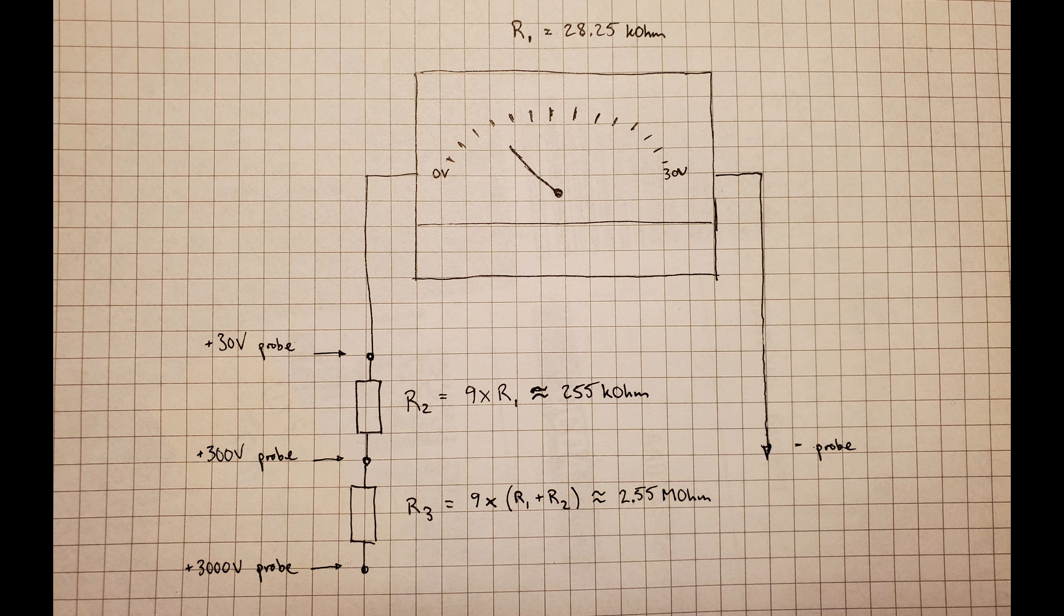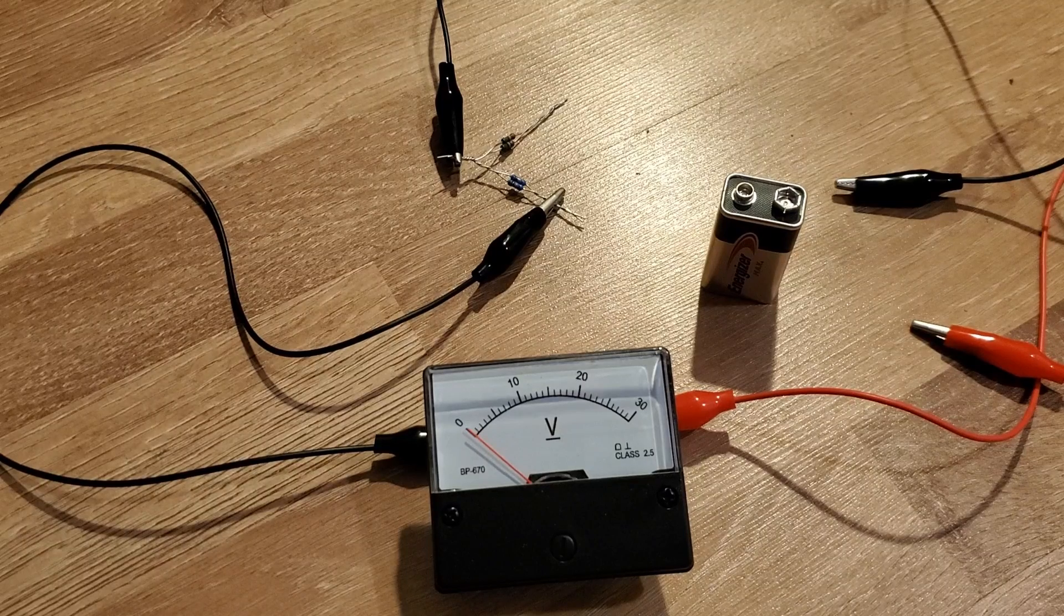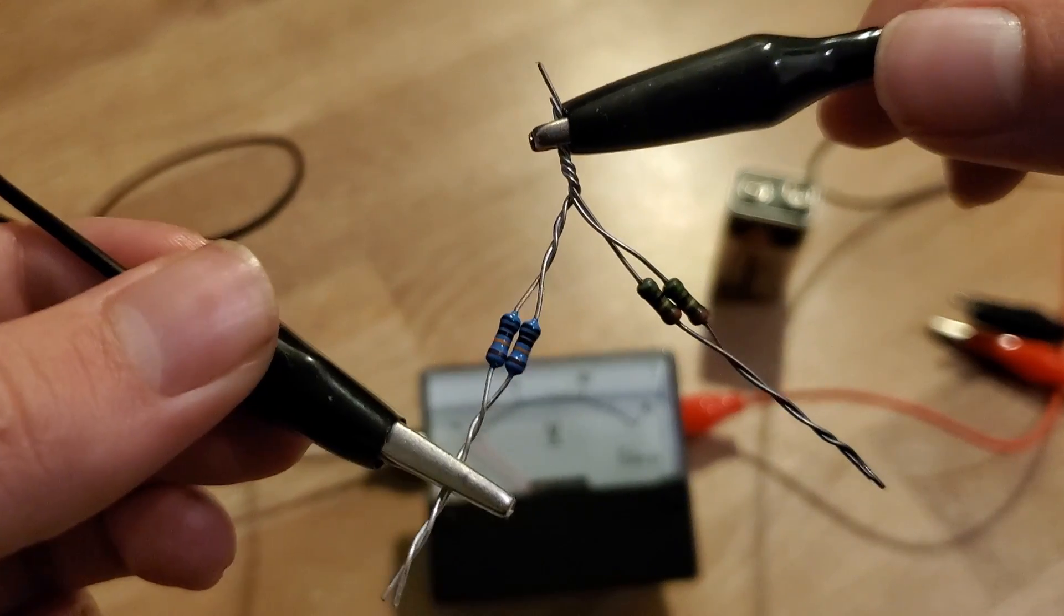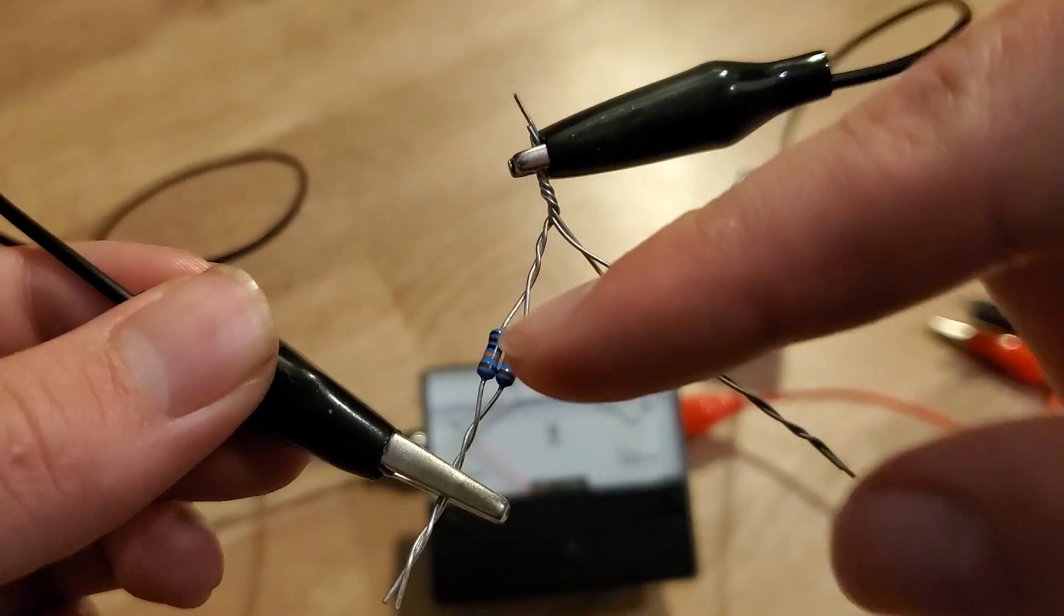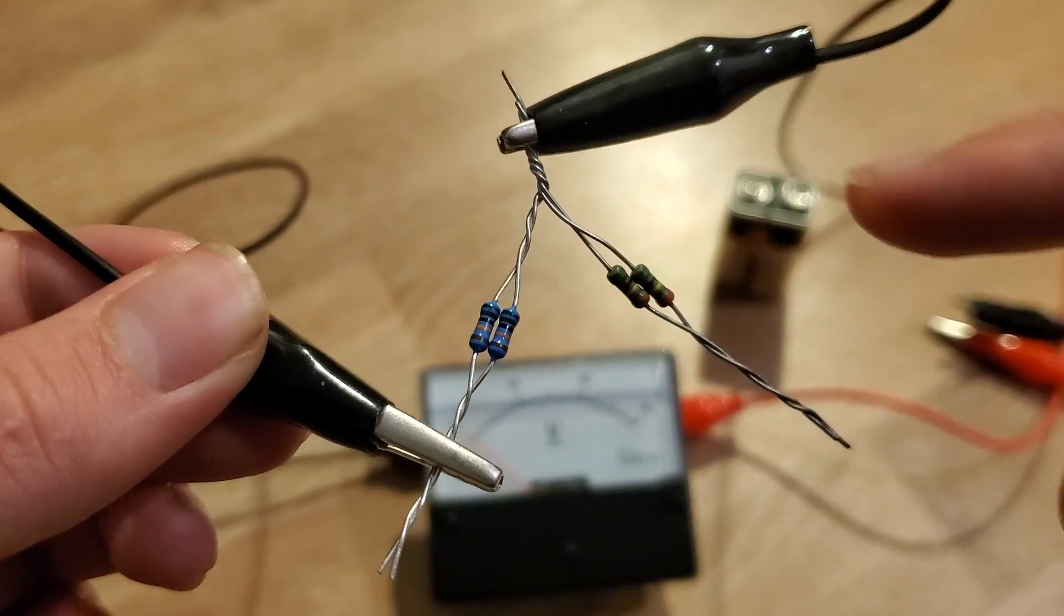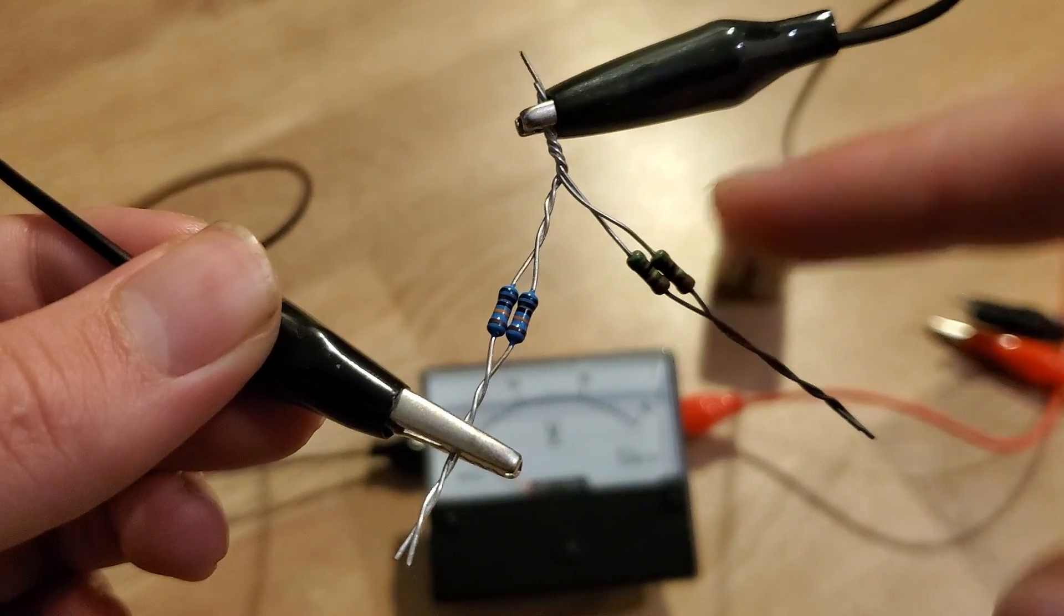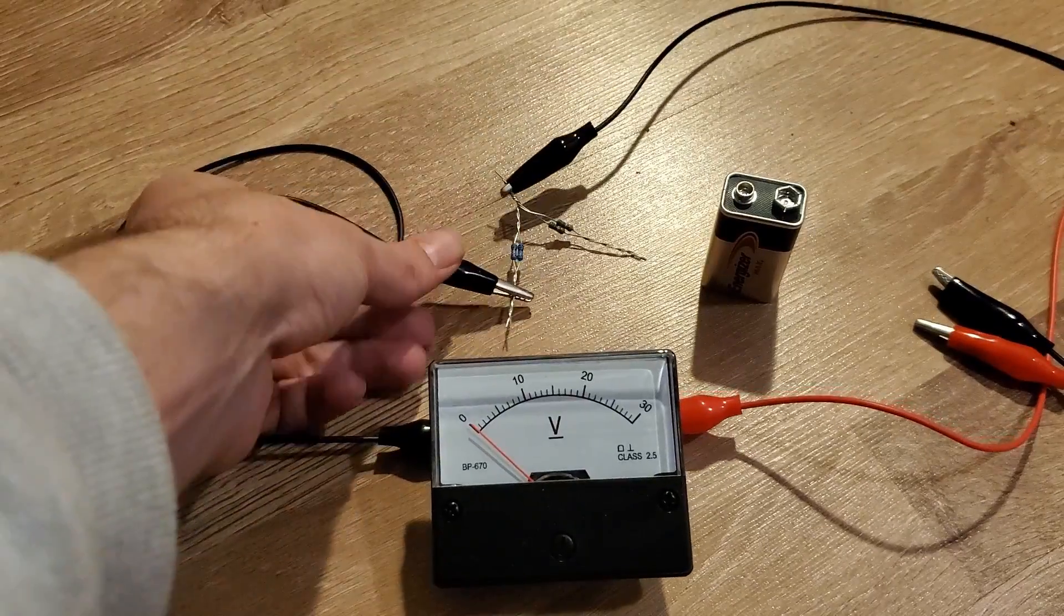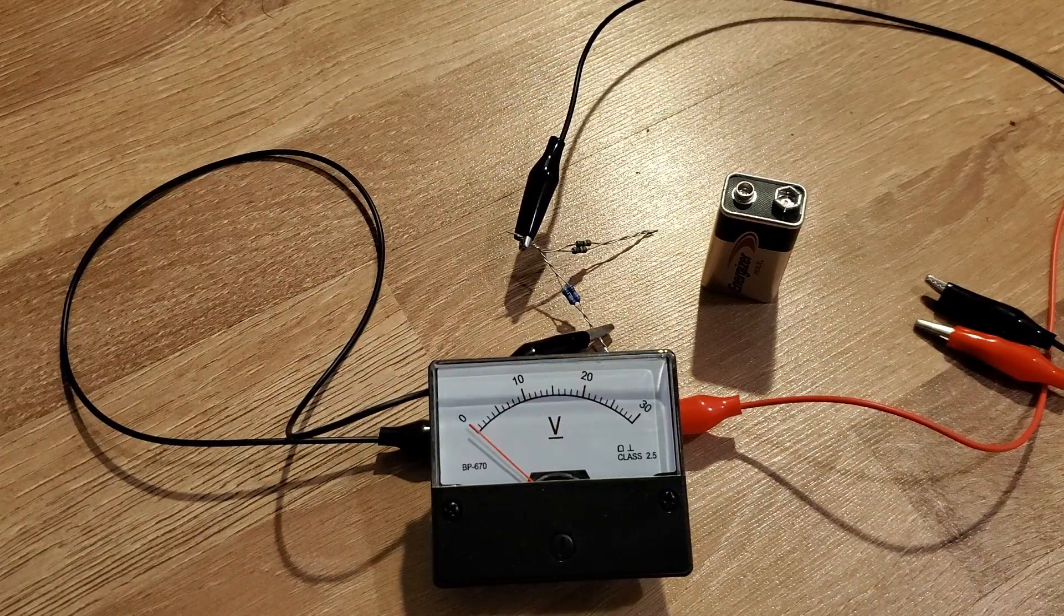The 300 volt range is useful for running gels, while the 3000 volt range is useful for electroporation experiments. Since I couldn't easily source any 255 kOhm or 2.55 megaohm resistors online, I simply put two 510 kOhm resistors in parallel to get 255 kOhms or two 5.1 megaohm resistors in parallel for 2.55 megaohms. The result isn't very pretty, but it works.